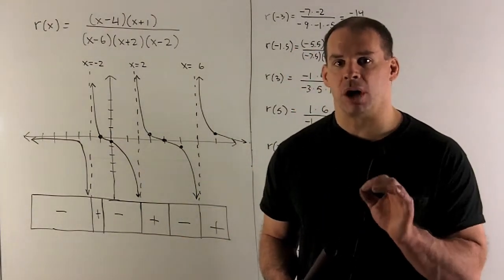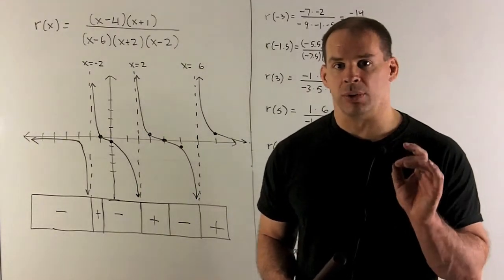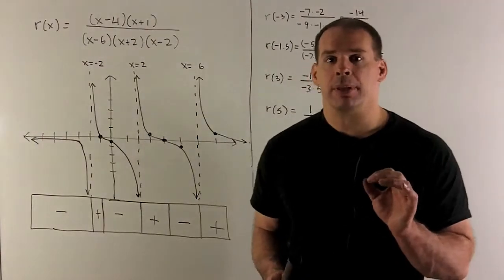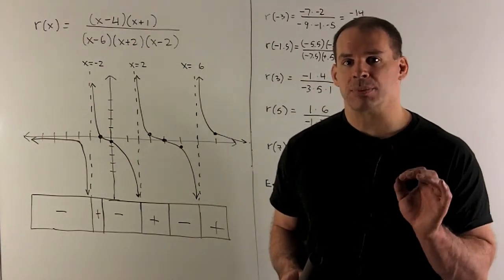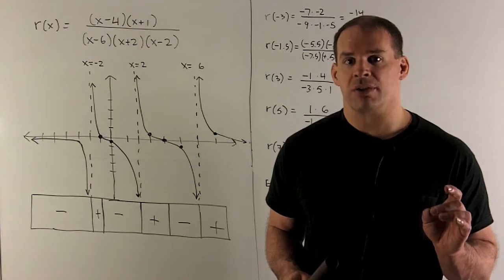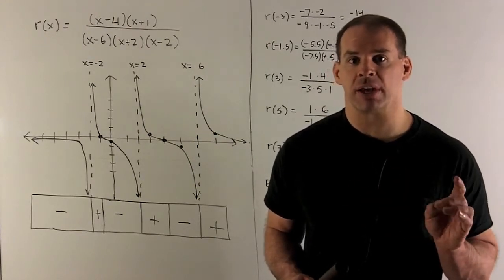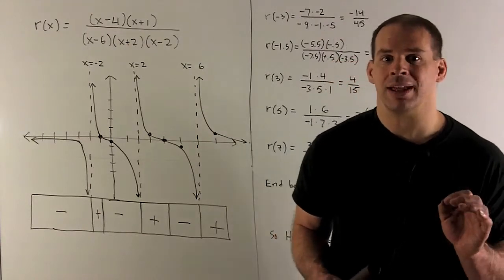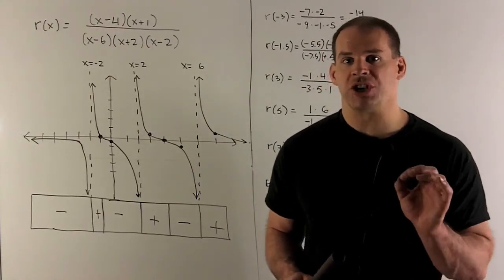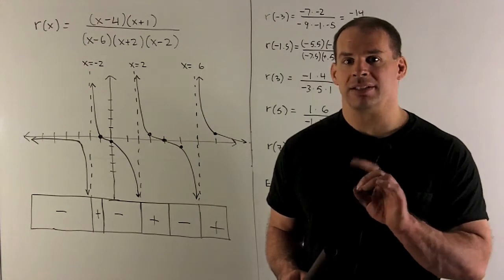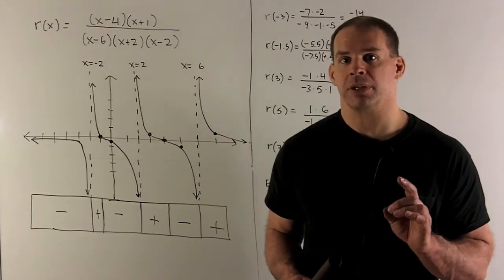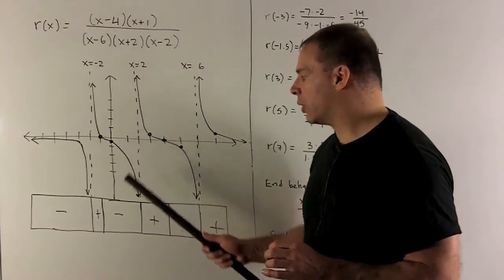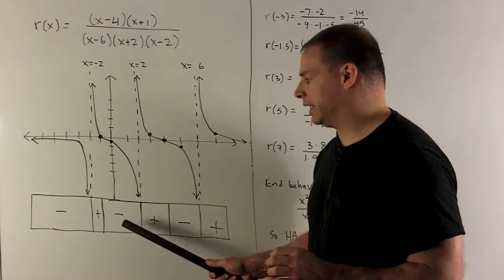Next step, I want to determine where our function is positive or negative. The way we do this, I'm going to draw on a box. Then I'm going to split it up by where we have vertical asymptotes or zeros. The only way we could change from positive to negative or vice versa is if I go through a vertical asymptote or a zero. If we take a look at our y-intercept, we had -1/6. So in this region, it's going to be completely negative.